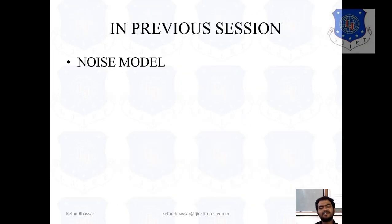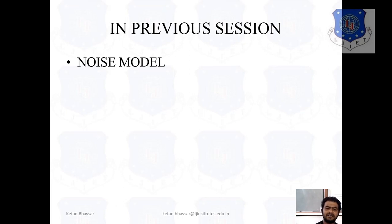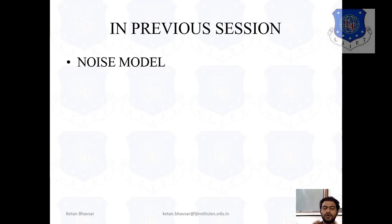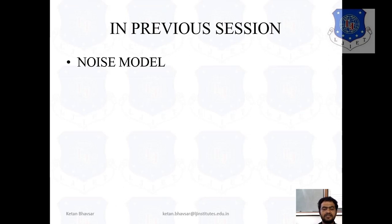In the previous session, we discussed about different types of noise models and different types of noises like Gaussian noise, Uniform noise, Salt and Pepper noise, and Rayleigh noise. There are different types of noise that are added in our images and because of this type of noise, it will degrade the quality of the image. Now, we study the different types of noise models and also see how, in terms of the graphical way, after adding the noise in your image, how your image finally looks like. And also, we try to reduce the noise using different types of filters that we study in this topic.